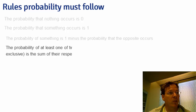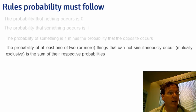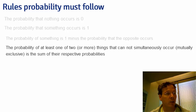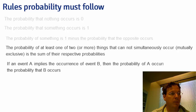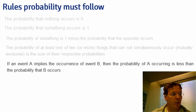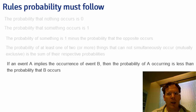The probability of at least one of two or more things that cannot simultaneously occur — we call sets of things that cannot simultaneously occur mutually exclusive — is the sum of their respective probabilities. This was part of the basic definition outlined in the previous slide. Another consequence of our probability calculus is that if event A implies the occurrence of event B, then the probability of A occurring is less than the probability that B occurs. This is kind of a tongue twister to say, and it seems a little bit conceptually hard.